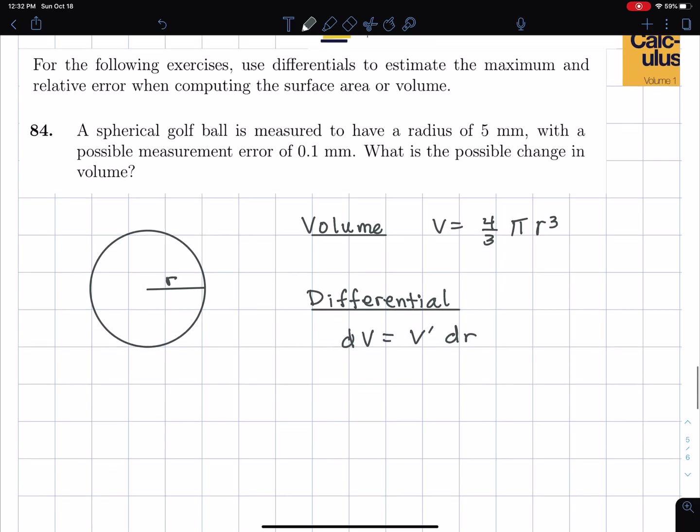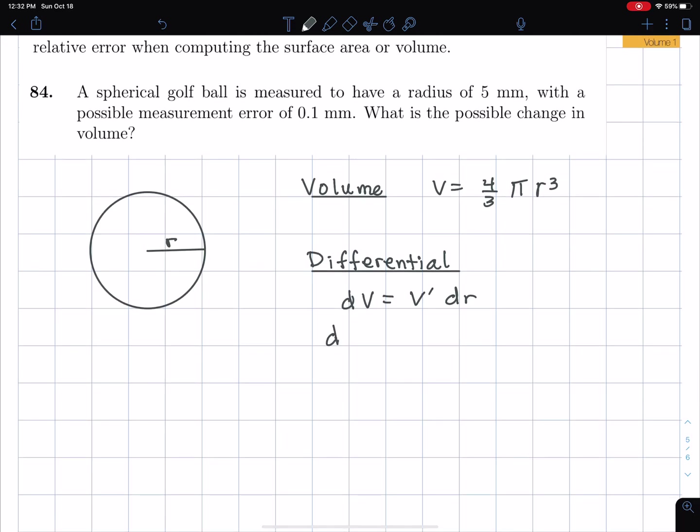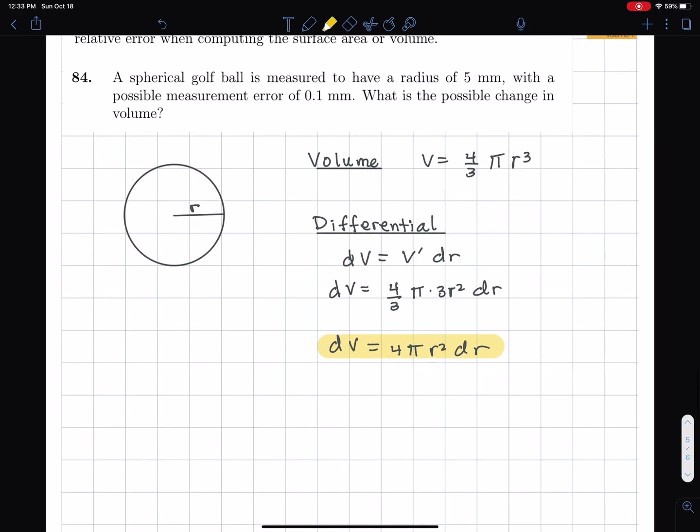But now I can just go ahead and just take the derivative of V, which is four-thirds pi times three r squared and then dr. So therefore, dV is going to be four pi r squared dr. So that's a little bit of a step that we achieved there by getting that.